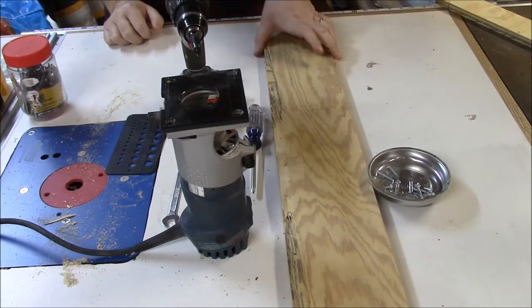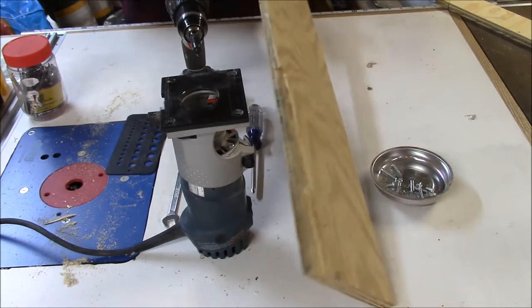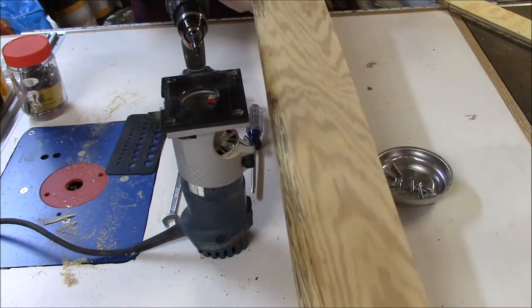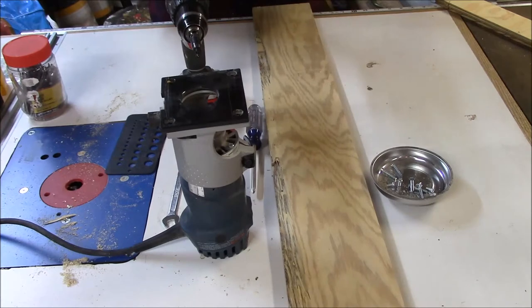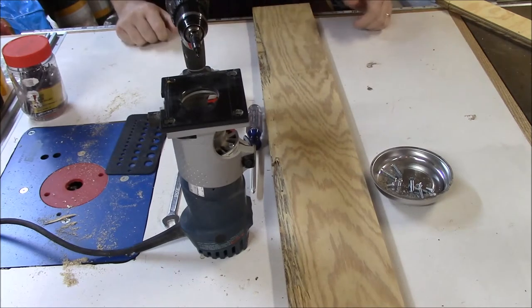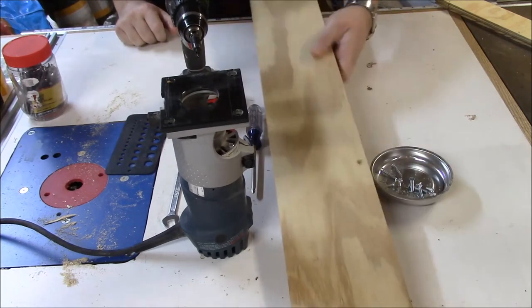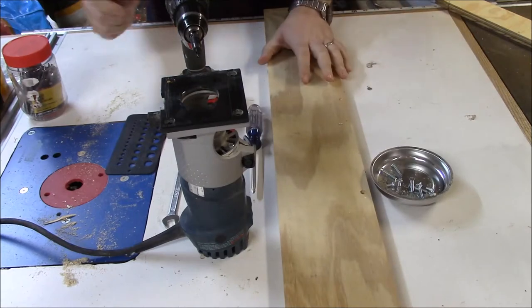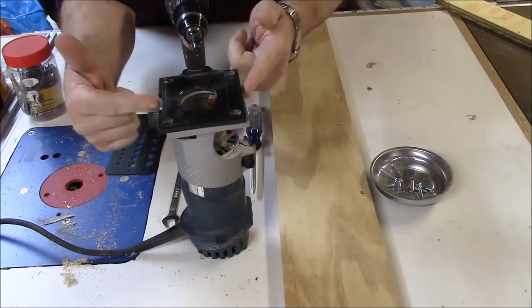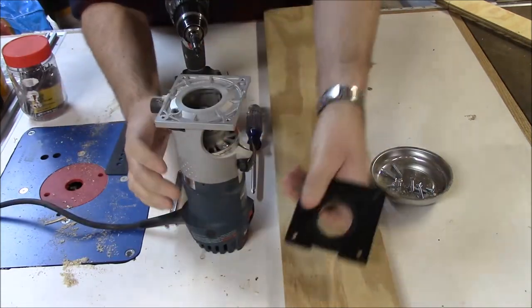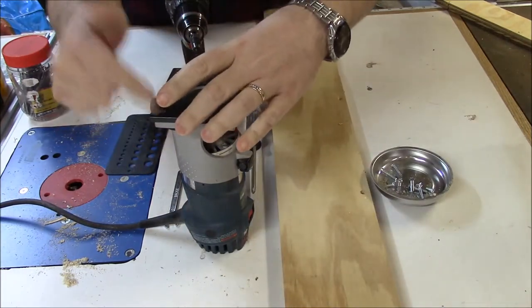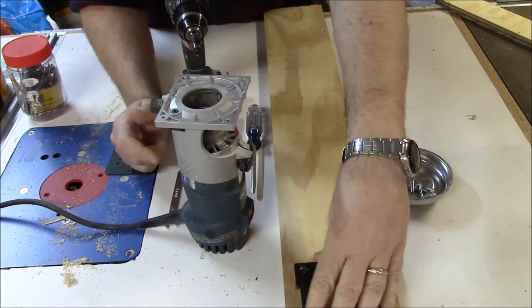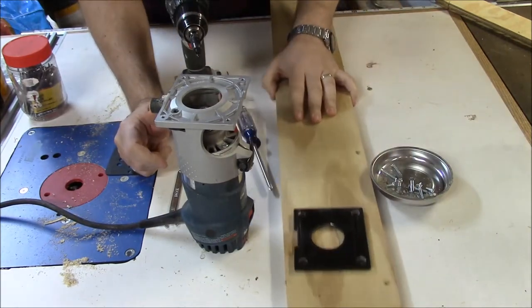Alright, so here's what we need for the trammel. You've got a piece of scrap board here. We're going to use this. This is what's going to basically be what decides how big our circle is. Just a piece of scrap, and it's just about as big as the router is here. Maybe a little bit bigger. Probably want to go bigger rather than smaller. Take the plastic plate off. We're going to mark where that has to go here.